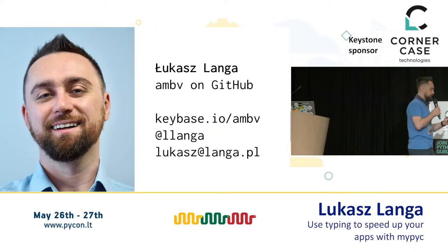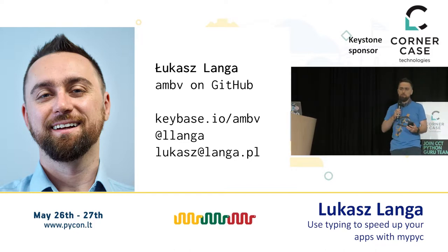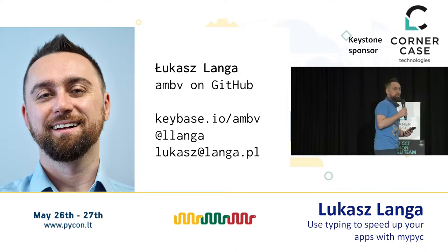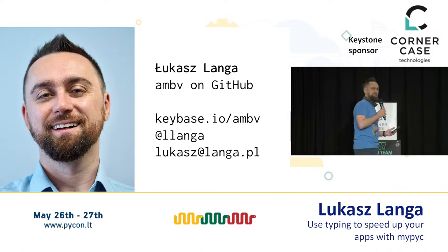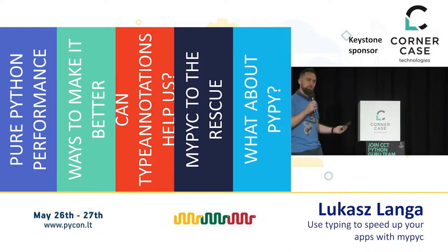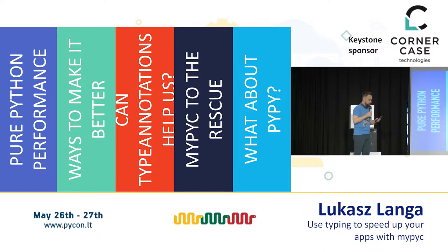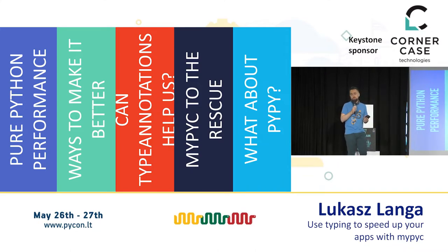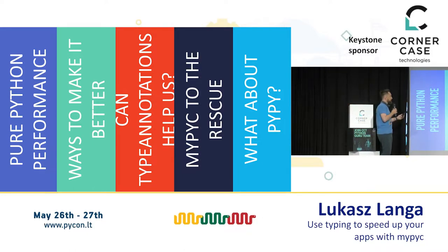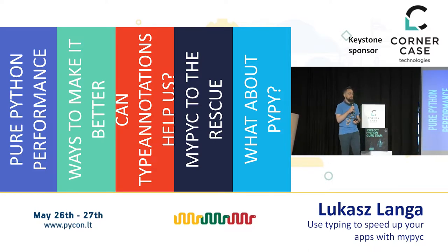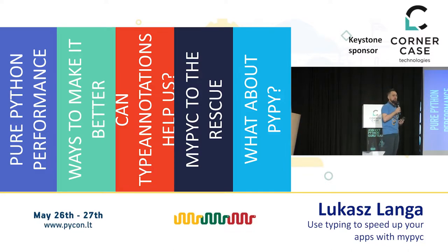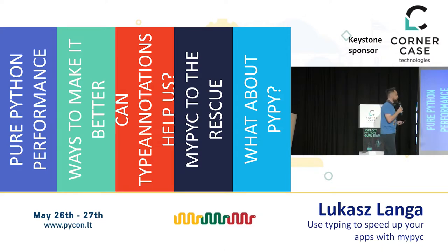Today we're going to be talking about a project that is not really related to my particular piece of work, but I am a user of it and a big fan of it. The reason we need it is that Python is kind of slow. We're going to talk about how this is typically solved currently, whether type annotations can help us make our code run faster, and spoiler alert - yes they can because MyPyC is the project I'm advertising today. Finally, we'll discuss JITs and other methods to make Python faster.